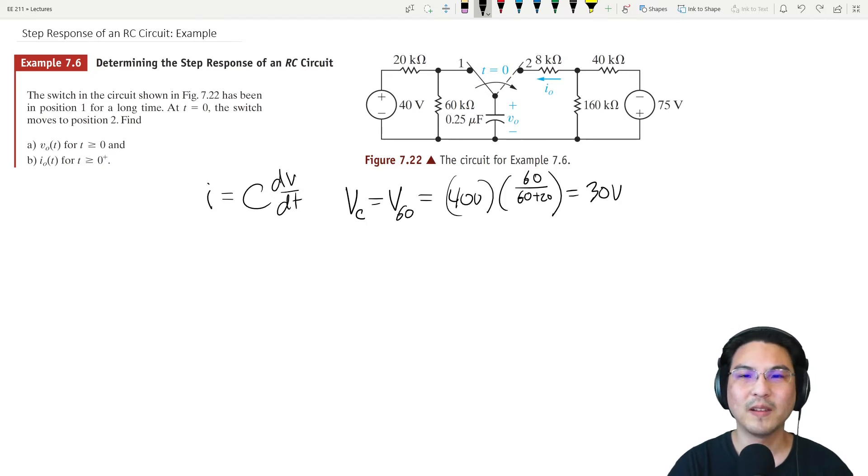So when we hit the switch, it's gonna be 30 volts immediately after we move the switch. Now when we're over here, the voltage across the capacitor is 30 volts.